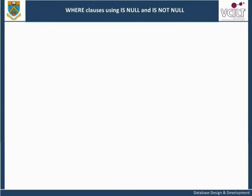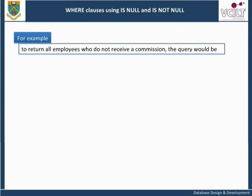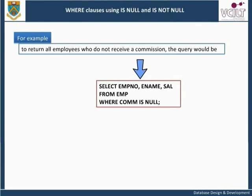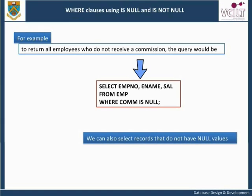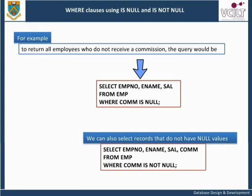WHERE clauses using IS NULL and IS NOT NULL. For example, to return all employees who do not receive a commission, the query would be: SELECT employee number, employee name, salary FROM employee WHERE commission IS NULL. We can also select records that do not have null values: SELECT employee number, employee name, salary, commission FROM employee WHERE commission IS NOT NULL.